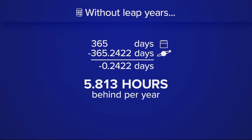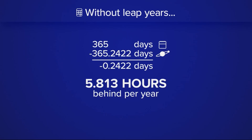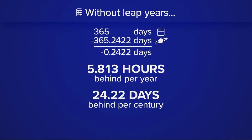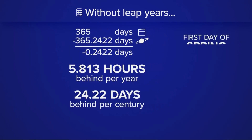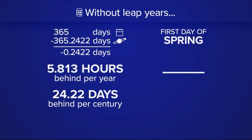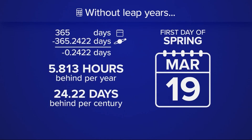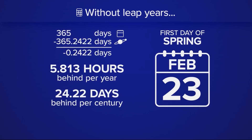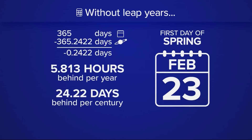So our calendar is behind about 5.8 hours each year. While this is a small number, over decades and centuries this would have an impact on our calendar. In 100 years, our calendars would be off 24 days. So for example, instead of the first day of spring being on March 19th, without leap year it would be on February 23rd.